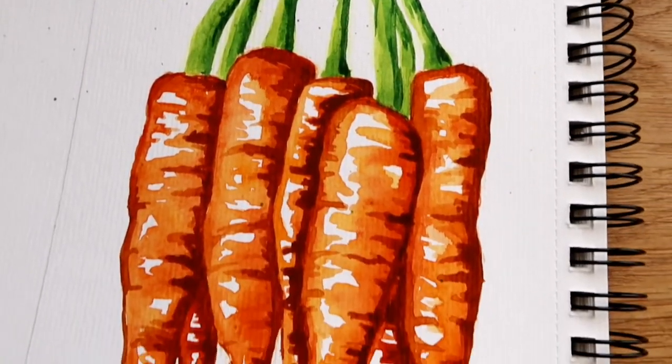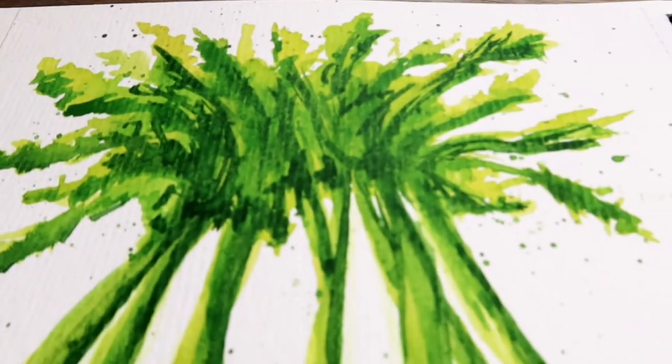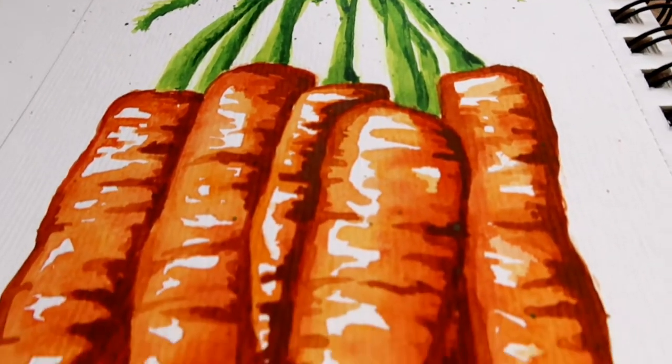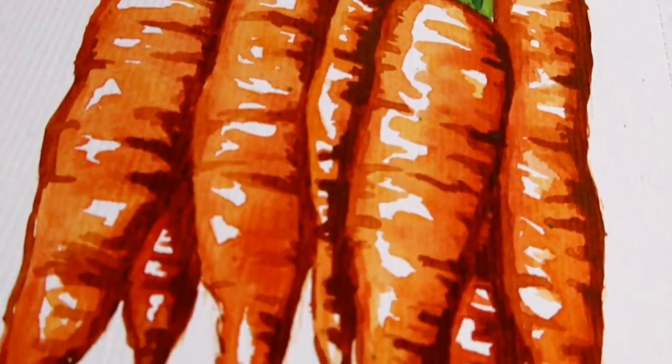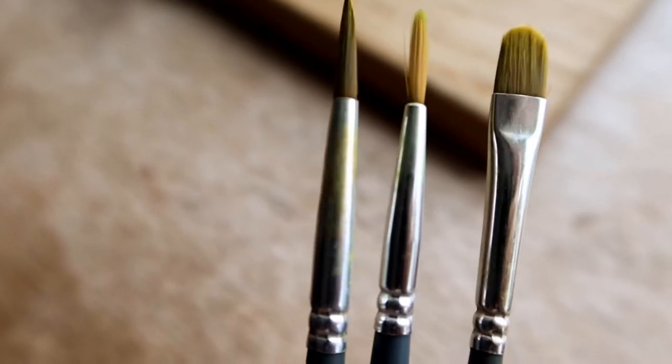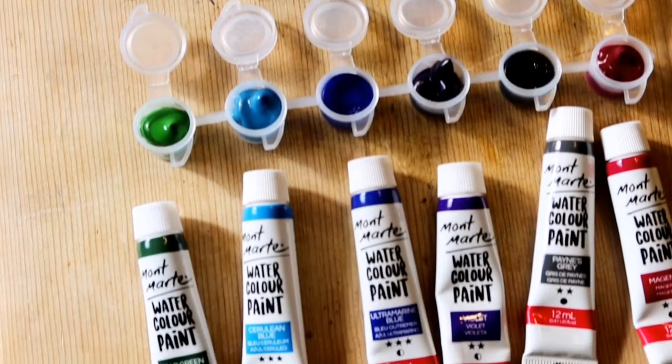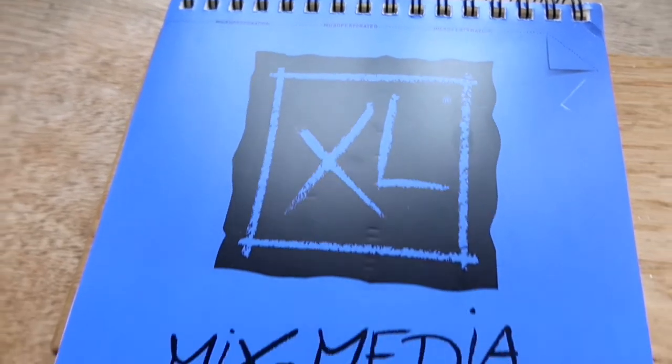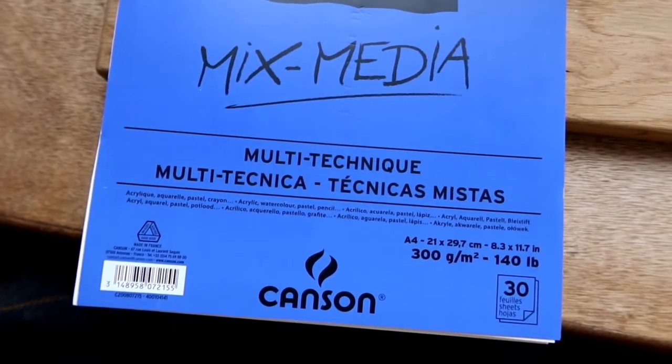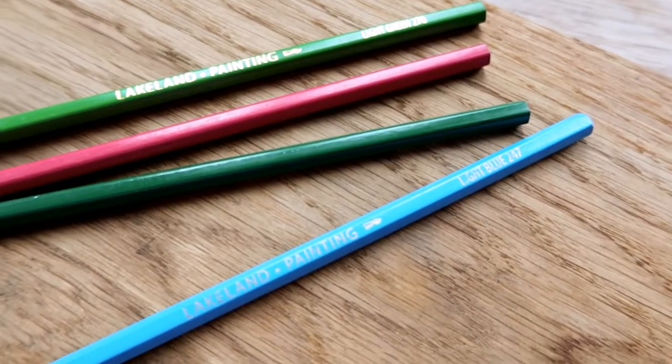Hello and welcome to a new video. I hope you're having an amazing day. In this video I'll be painting watercolor carrots, but before I walk you through the steps, I'll cover the materials I used: my Winsor & Newton brushes - a filbert brush in size 2, round brushes in sizes 3 and 5, my Montmartre watercolor set, my Canson 300 GSM mixed media sketchbook, and my Lakeland water soluble pencils.